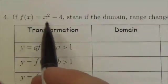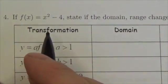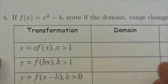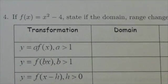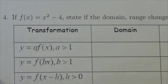Okay, hi everybody. In this question we're starting with x squared minus 4 and we're going to state the domain and range changes and give the location of any invariant points.